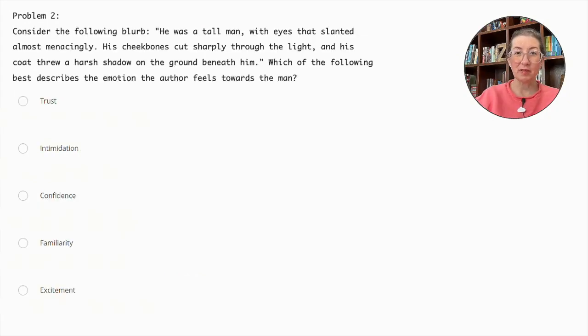Problem two. Consider the following blurb: He was a tall man with eyes that slanted almost menacingly. His cheekbones cut sharply through the light, and his coat threw a harsh shadow on the ground beneath him. Which of the following best describes the emotion the author feels towards the man? Trust, intimidation, confidence, familiarity, or excitement.